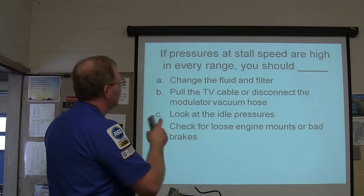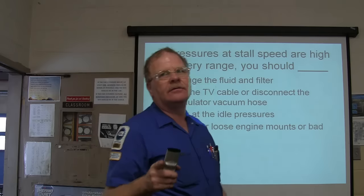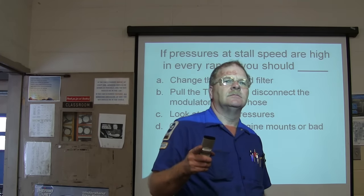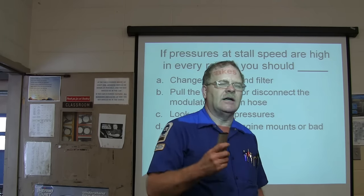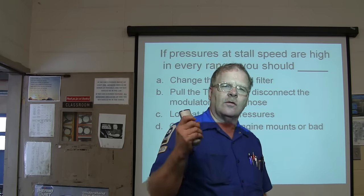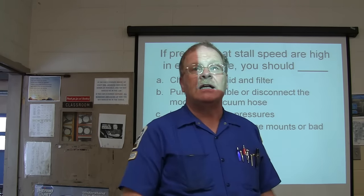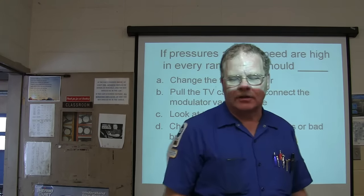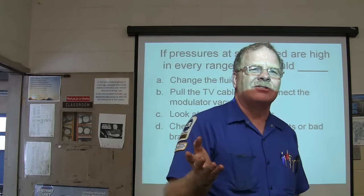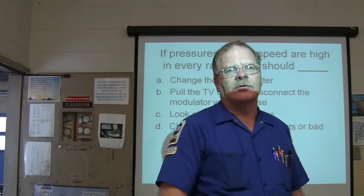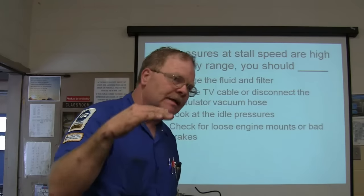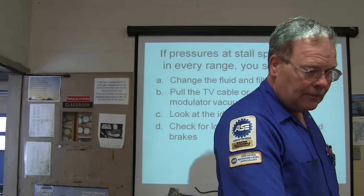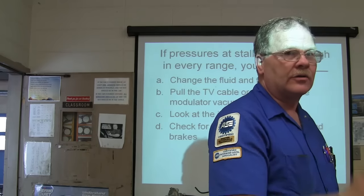If pressures at stall speed are high, what's stall speed? Describe stall speed. Lock the park brake, stand on the brake, put it in gear, floor the accelerator. Stall speed is where it stops accelerating. It's going to come to a place, and you're basically using the transmission for a dyno. The stall speed is supposed to be at a certain level. If the one-way clutch and the stator is out, and the stator will turn either way, your stall speed will be low.